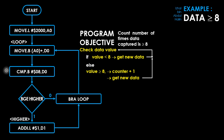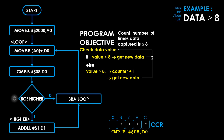The next instruction is BGE higher. When executed, it will use the status register to check its condition code given by the boolean expression. If the condition code value is 0, then the next instruction BRA loop is executed and the program branches back to label loop. However, if the condition code value is 1, then the program flow branches to label higher.